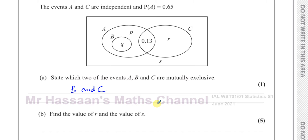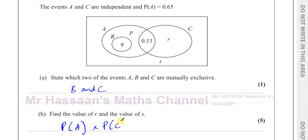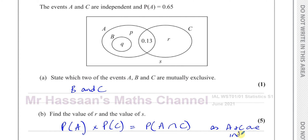Part b: find the value of R and the value of S. We're told A and C are independent and the probability of A is 0.65. When two events are independent, the product of their probabilities equals the probability of their intersection — so P(A) × P(C) = P(A ∩ C). This is only true if they are independent.